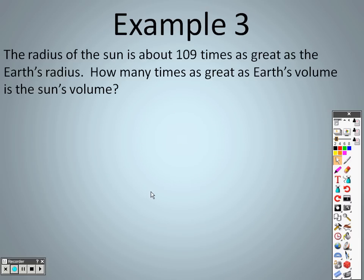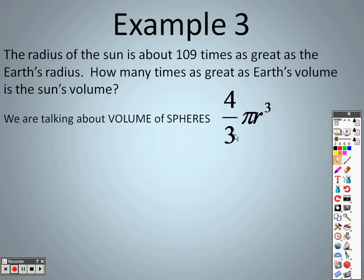So with example 3 here, it says the radius of the sun is about 109 times as great as the Earth's radius. How many times as great as Earth's volume is the sun's volume? The only way you can really do this word problem is you've got to know what the volume of a sphere is, and there it is: 4 thirds pi r cubed.